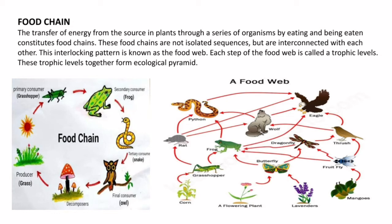Food chain and food web — while similar, they differ. A food chain is the transfer of energy from source in plants through a series of organisms by eating and being eaten, which constitutes a food chain. These food chains are not isolated sequences but are interconnected with each other. Each step of a food web is called a trophic level. These trophic levels together form an ecological pyramid. When there is no interconnection, it's a food chain; when there is interconnection, it's a food web.